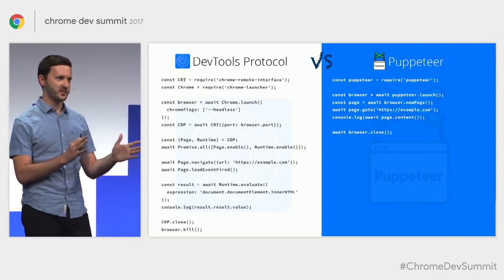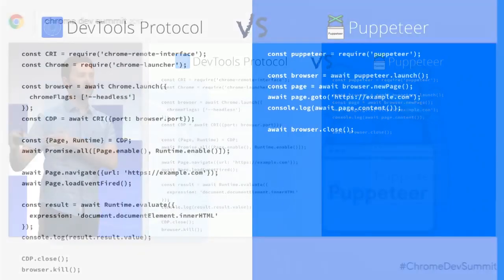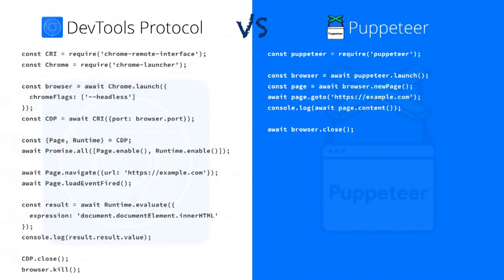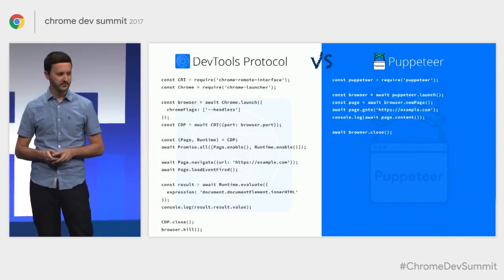Here's a quick comparison — don't worry too much about the code. On the left, you see how to use the DevTools protocol. On the right is the Puppeteer version. We're just navigating to a page and printing the HTML. Actually pretty complex in the DevTools protocol — I have to use a couple libraries to launch Chrome and wrap the protocol, enable page and runtime domains, wait for promises, navigate, wait for the load event, evaluate script. On the Puppeteer side, that's just a couple lines of code you can follow line by line.